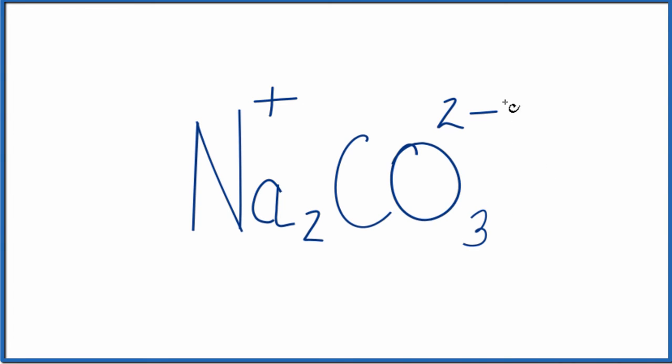So we have two minus here and two times one plus, two plus, net charge of zero. This is our ionic compound.